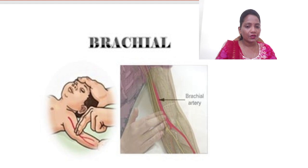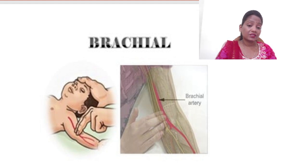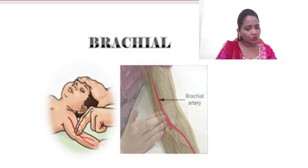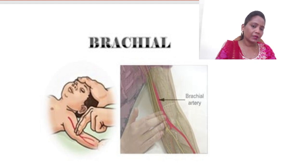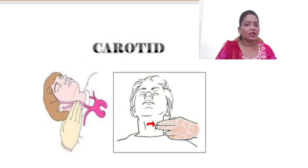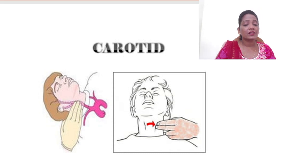The brachial site is very easy to use and works well even for children. However, if a patient has an IV cannula in that area, you may not be able to access the brachial artery. In that case, you can use the carotid pulse.